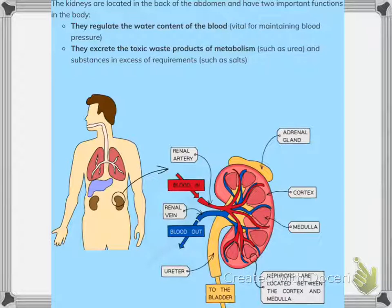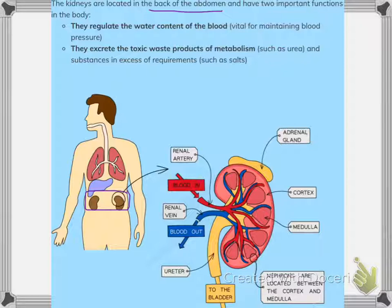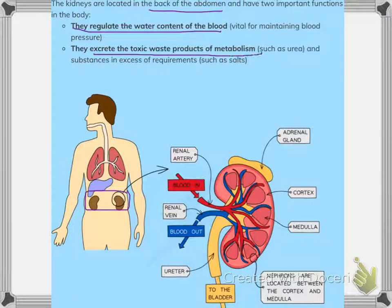The kidneys are located in the back of the abdomen and have two important functions. The first function is that they regulate the water content of the blood. Maintaining the water content of the blood is important because it maintains blood pressure in the human body and excretes the toxic waste products of metabolism.